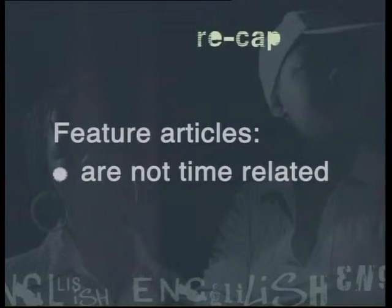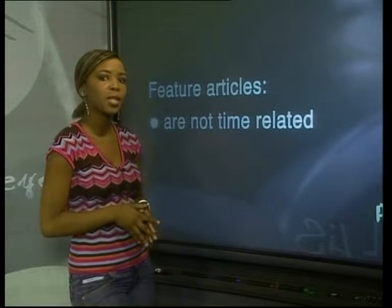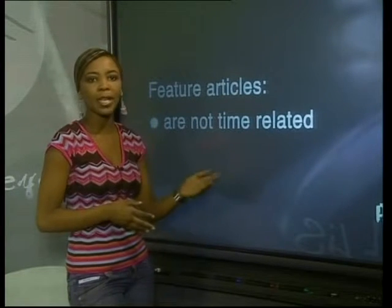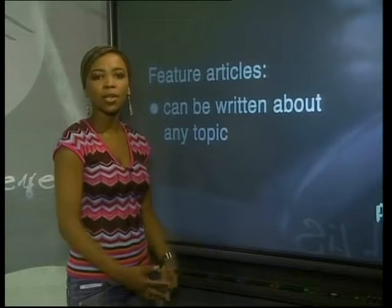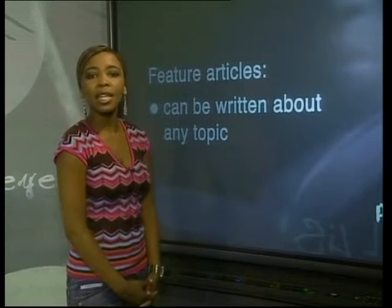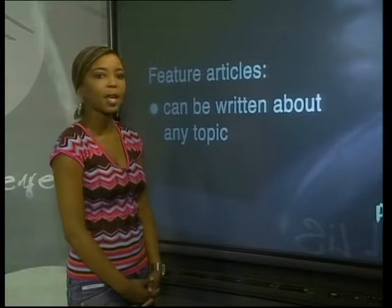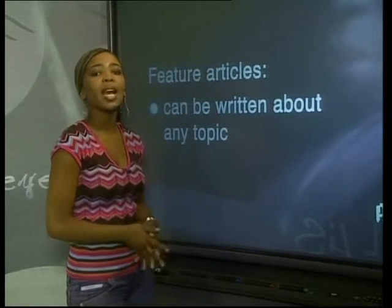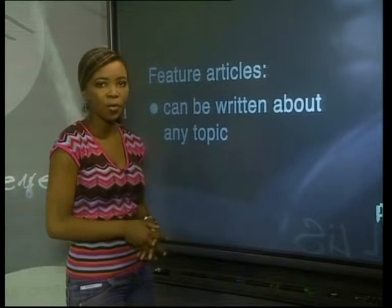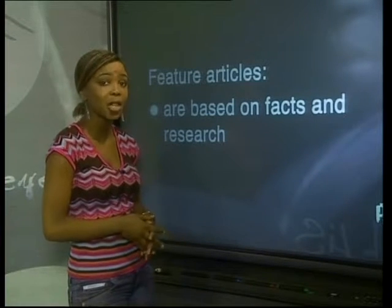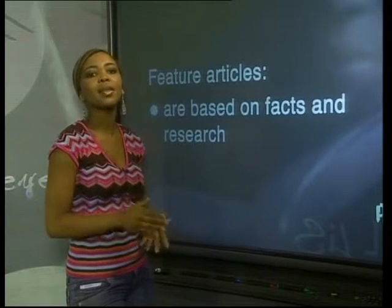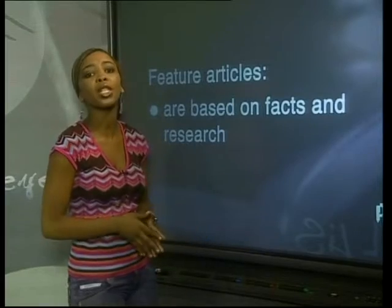Let's sum up the main points that Bongani and Ryan have shared. Feature articles can be written at any time — they are not front page news stories about something that has just happened. Features are a lot more flexible and can be written about any topic, whereas news articles are often about serious topics like politics, the economy or crime. Features add variety to a newspaper, but their intention is always to tell readers something they didn't already know. Feature articles are still always researched and based on facts — a journalist cannot make things up, even on a light-hearted subject.